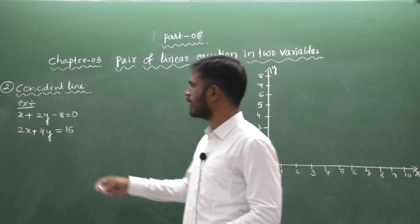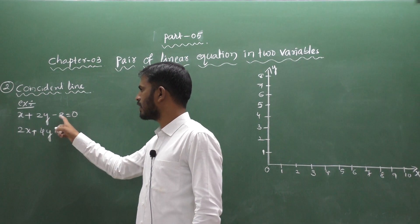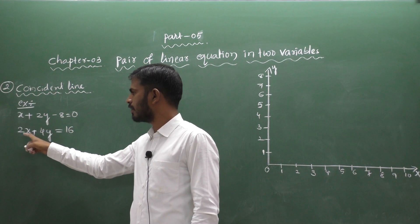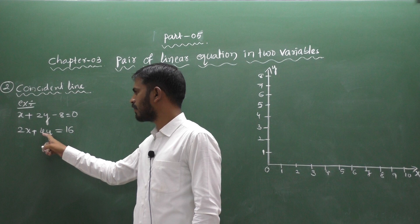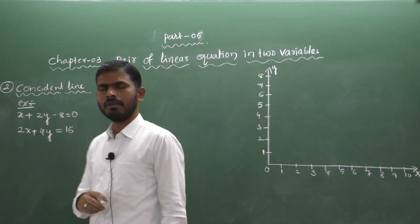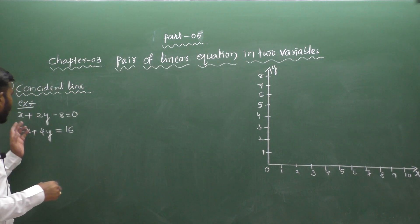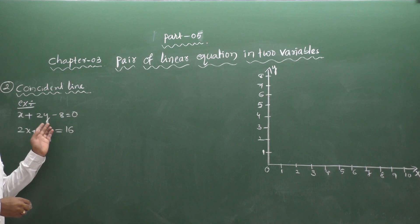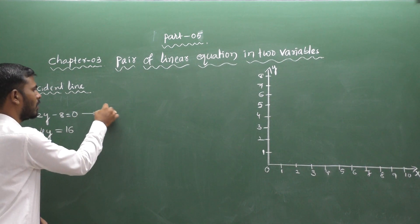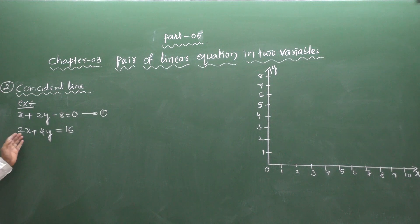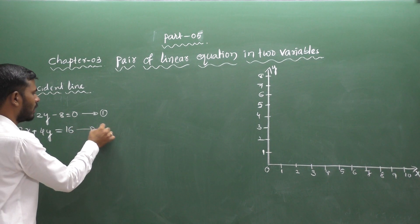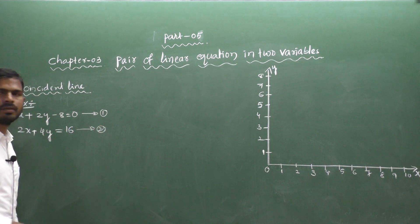The example I consider here is x plus 2y minus 8 equal to 0 — this is equation number 1. The next equation is 2x plus 4y equal to 16 — this is equation number 2.